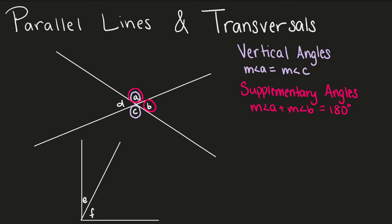Similarly, we have complementary angles. We use complementary angles when we are working with right angles. Right angles are worth 90 degrees. So if we take a right angle and intersect that with a line segment, we'll get two angles whose sum is 90 degrees. In this example, angle E plus angle F would give us 90 degrees.